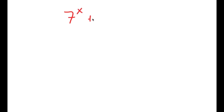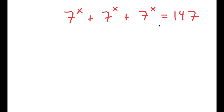In this video, I'm going to solve the equation 7 to the power of x plus 7 to the power of x plus 7 to the power of x is equal to 147. To start, I'm going to factor out 7 to the power of x.